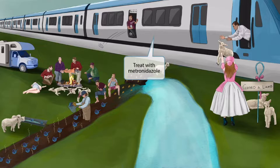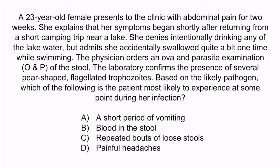Now that we've covered all the items in the image, let's do a question to apply what you've learned. A 23-year-old female presents to the clinic with abdominal pain for two weeks. She explains that her symptoms began shortly after returning from a short camping trip near a lake. She denies intentionally drinking any of the lake water, but admits she accidentally swallowed quite a bit one time while swimming. The physician orders an ova and parasite examination, O&P, of the stool. The laboratory confirms the presence of several pear-shaped flagellated trophozoites. Based on the likely pathogen, which of the following is the patient most likely to experience at some point during her infection? A, a short period of vomiting. B, blood in the stool. C, repeated bouts of loose stools. Or D, painful headaches.